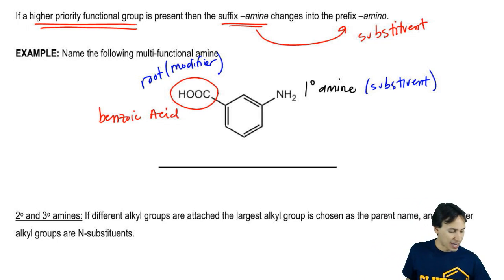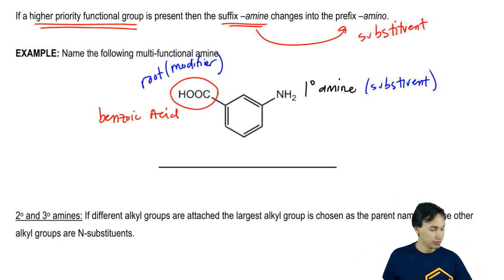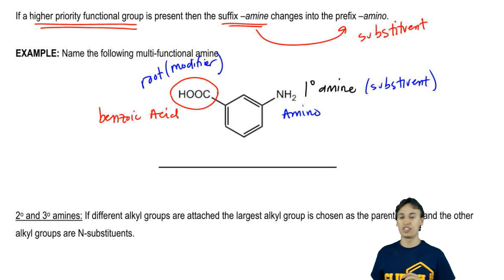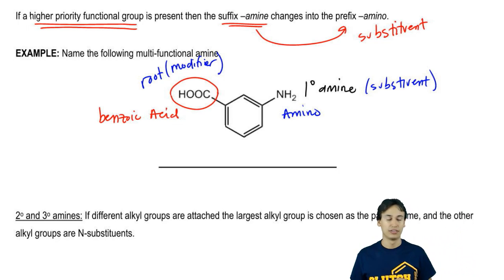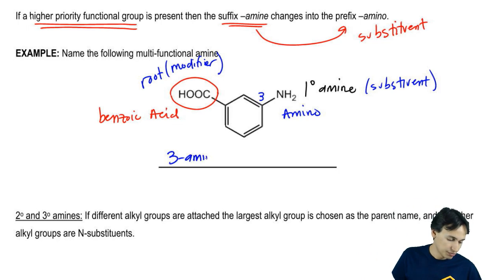That means that my NH2 is going to be named as an amino and it's going to be on which position? What number? Three. This would be on the three positions. What you could call this is you could say that this is three amino, one benzoic acid.